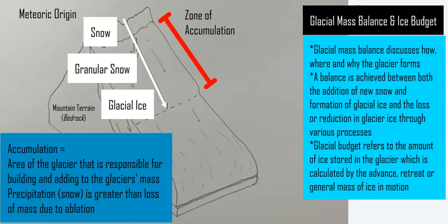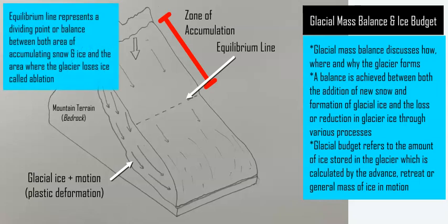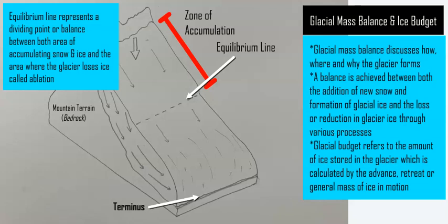Then you have the flow going down the mountainside, and this dashed line represents the balance between the accumulation of the glacier and the ablation — the decrease in ice, the decrease in the mass of the glacier as it flows downhill towards the end, which is called the terminus. The terminus could be on land or in a body of water like a lake or an ocean. This dashed line is called the equilibrium line, meaning there's a balance between accumulation and the loss or ablation of that glacier.